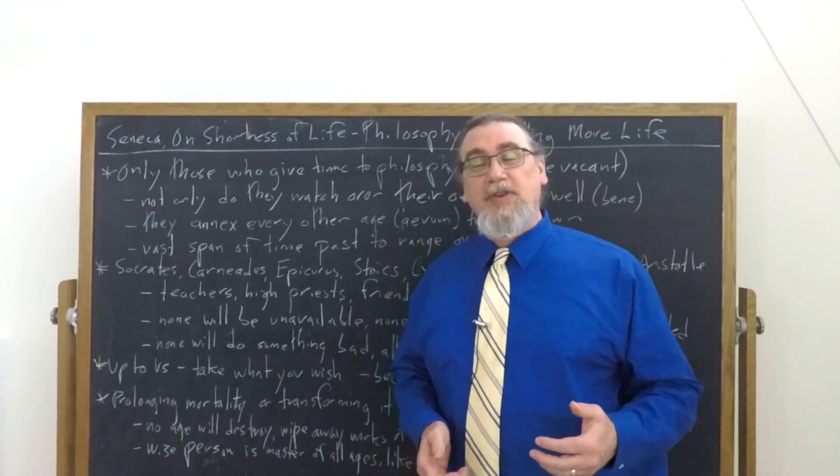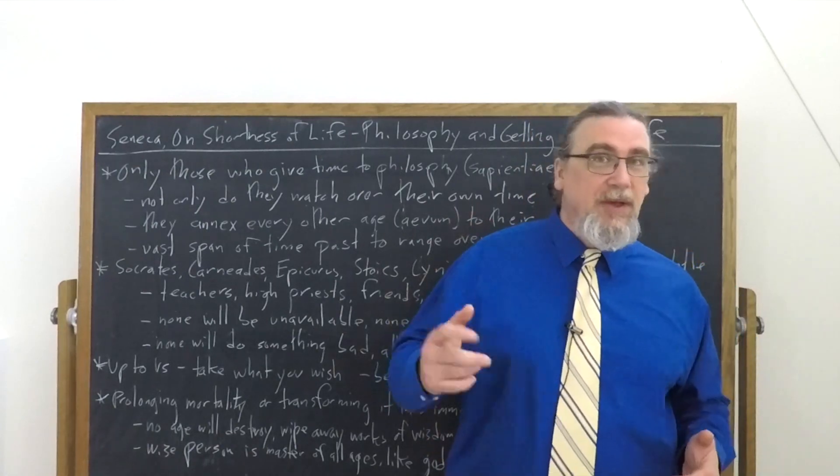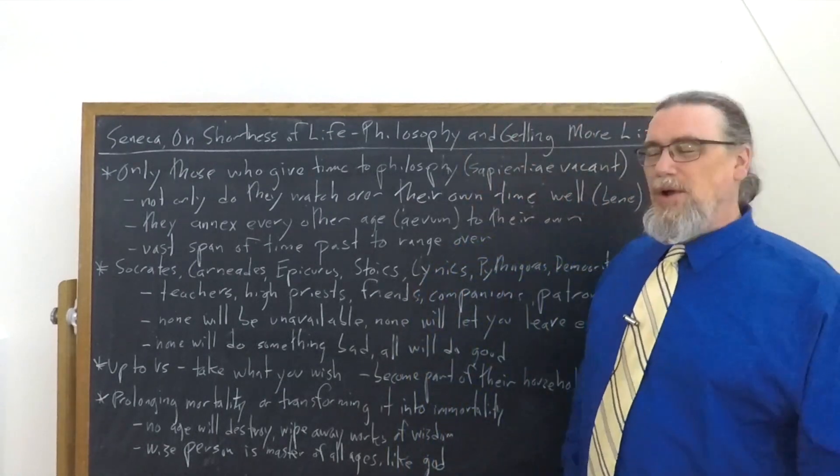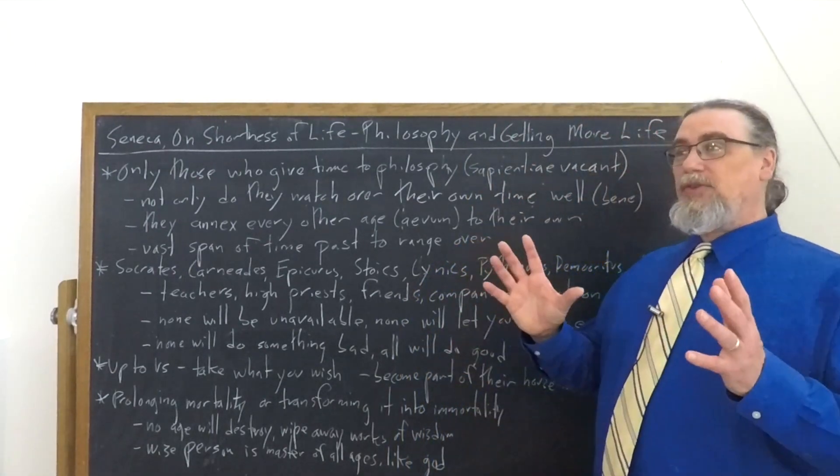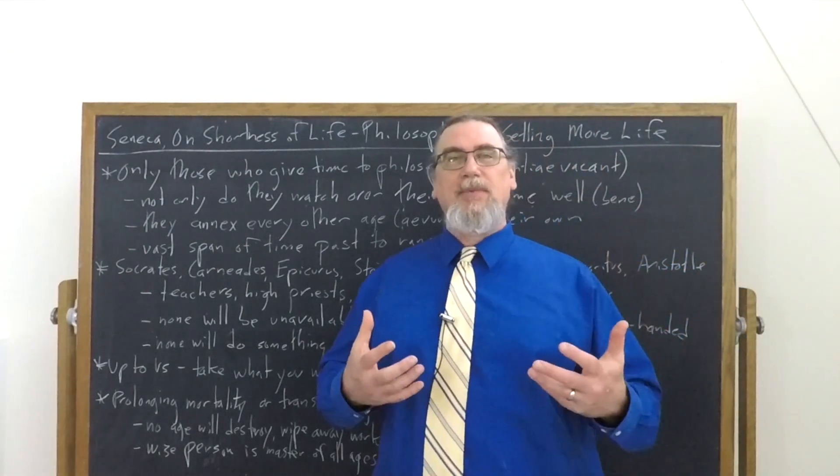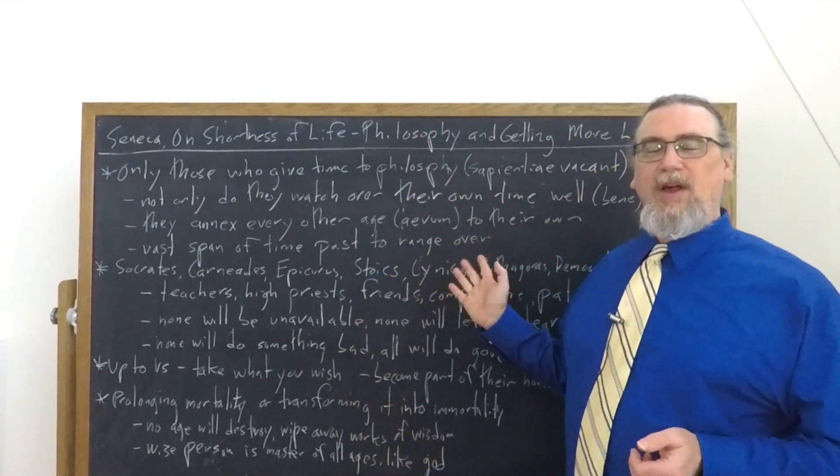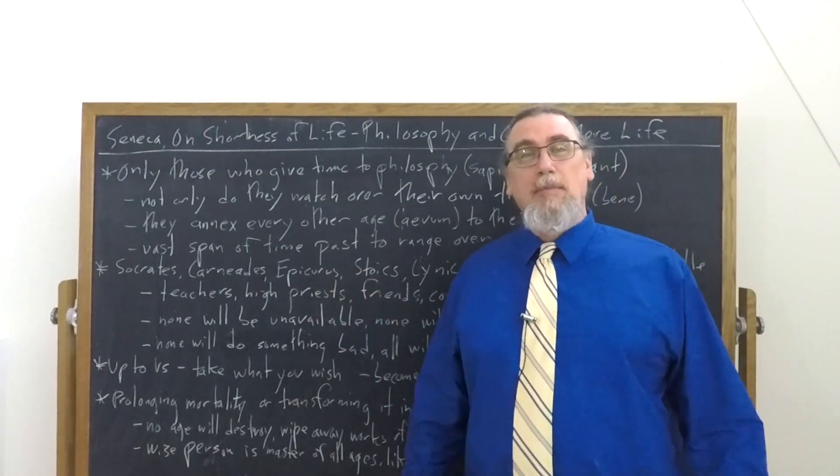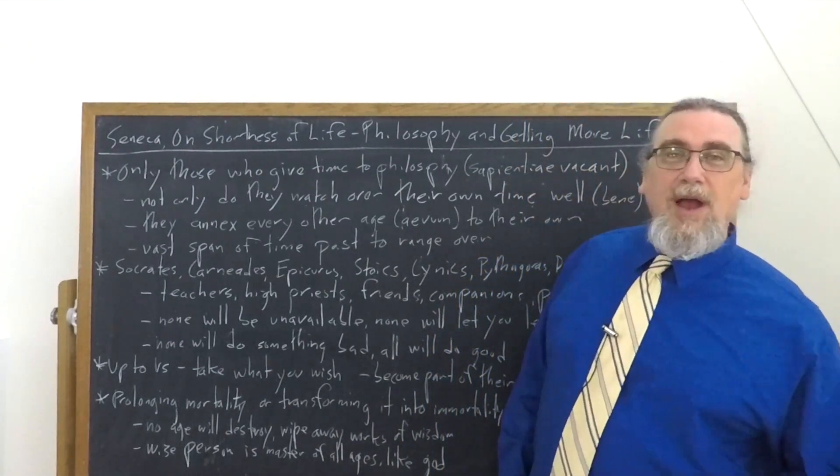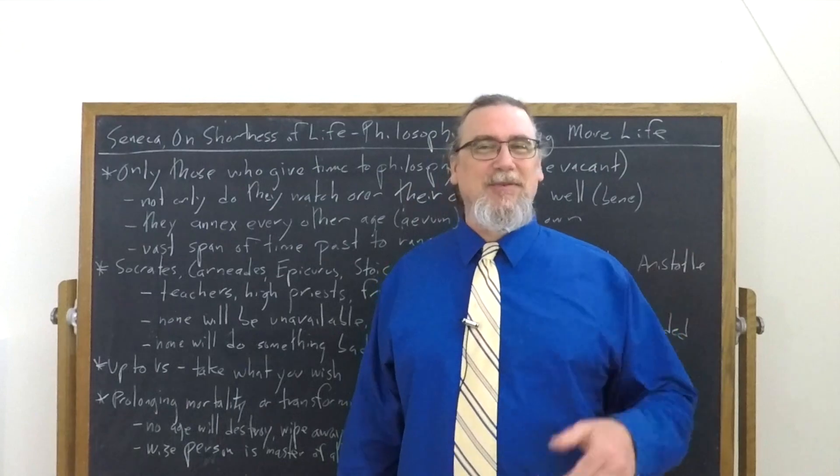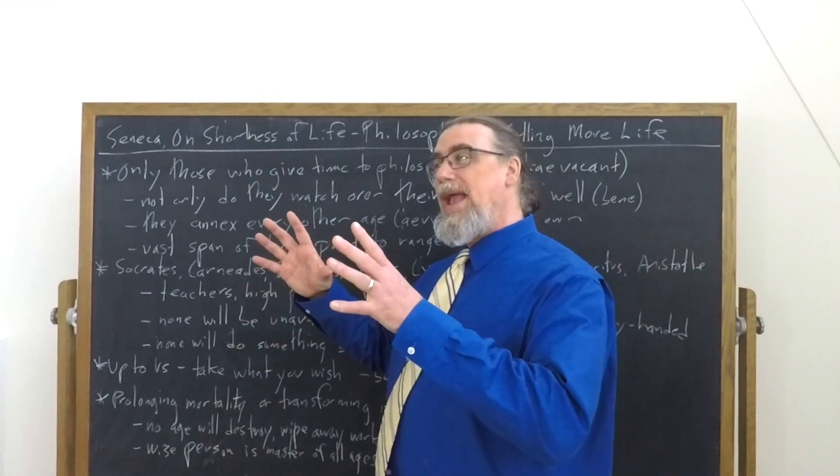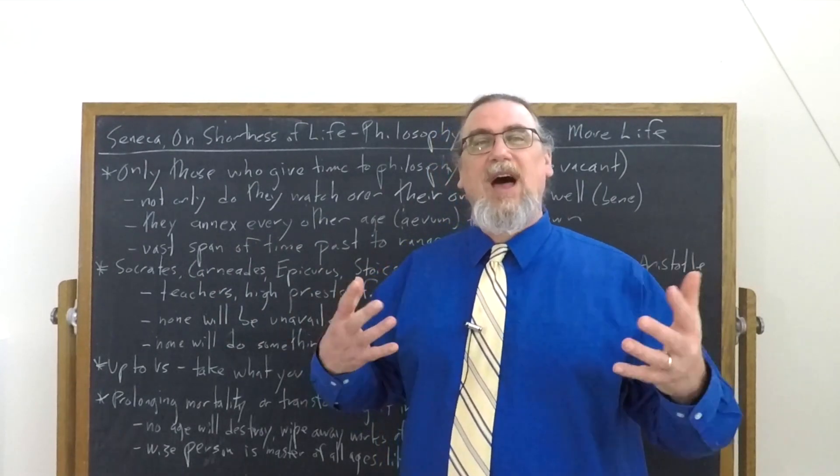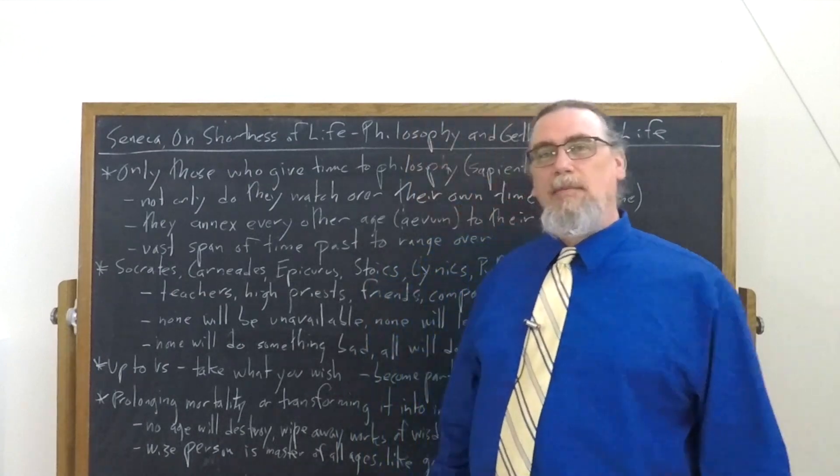For Seneca, this is primarily the Stoic school. So Zeno and Chrysippus and all these other great thinkers, some of whom he mentions in his works and in his letters. But he's also willing to become affiliated or adopted by some of these other schools as well. And this is a possibility for us. We don't choose our birth parents. We may not even choose our adoptive parents, for example. In my case, I was very fortunate in who I got. But we can have ourselves be adopted into whatever philosophical household we find most attractive.